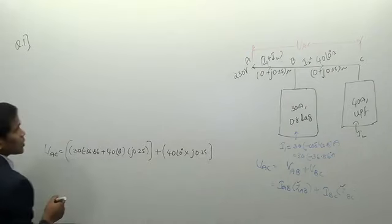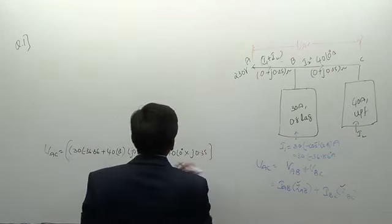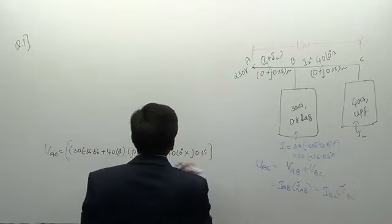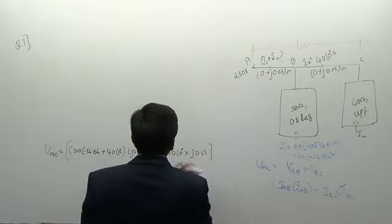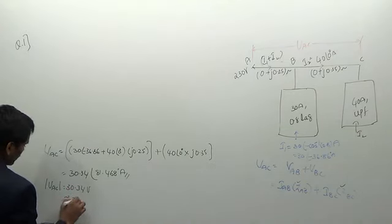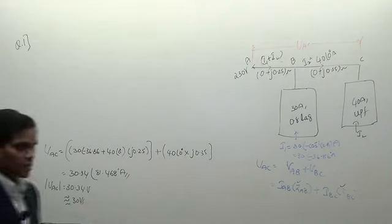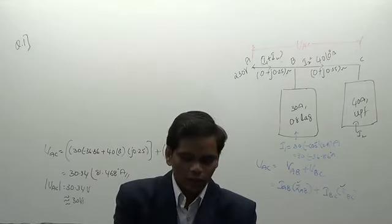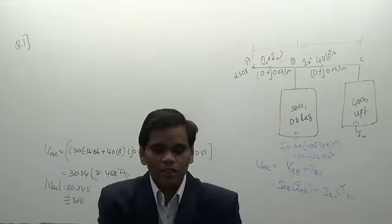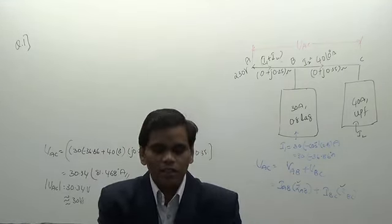The voltage drop in section BC is 40∠0 × j0.35. After calculation, the voltage drop from A to C comes out to 30.34 at angle 80.468 degrees amperes. So the magnitude is approximately 30.34 volts, nearly 30 volts. The answer is C.